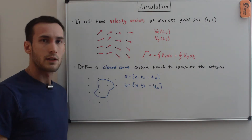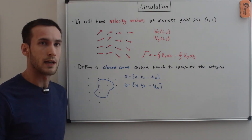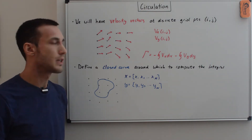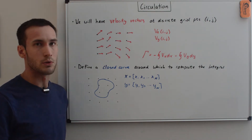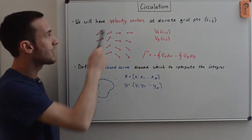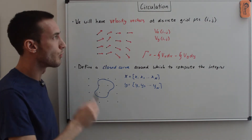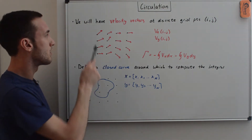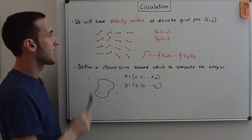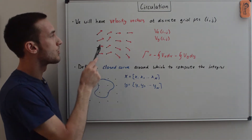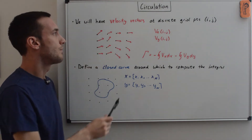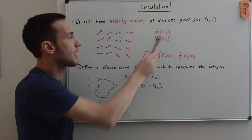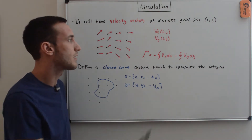In most calculus textbooks, the velocity and contour vectors are analytical expressions of x, y, and z, making the integral relatively simple. In our case, however, we have velocity vectors defined at discrete grid points with an index i, j. The discrete grid points are shown as black dots, and at each grid point there is a velocity vector. The x and y components of the velocity depend on the i, j grid point.